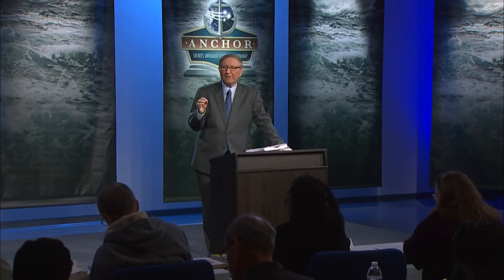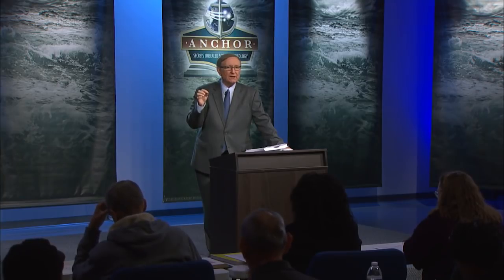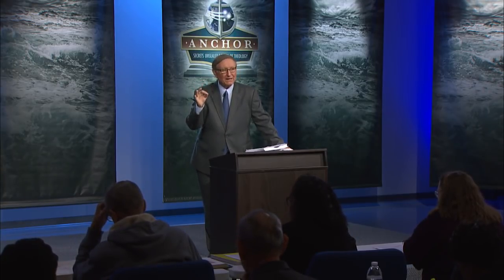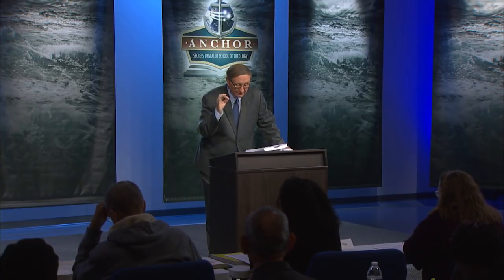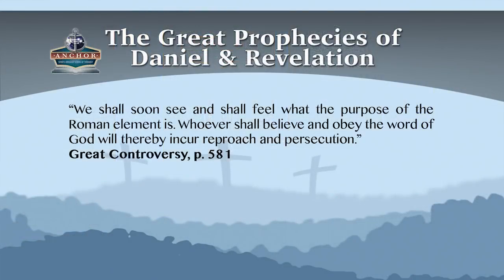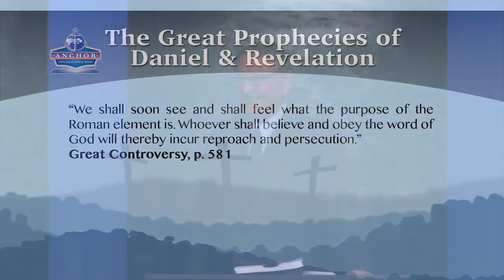Ellen White in Great Controversy page 581 speaks of 'the Roman element' when she describes the papacy — the church being able to use the state. She says: 'We shall soon see and shall feel what the purpose of the Roman element is... Whoever shall believe and obey the word of God will thereby incur reproach and persecution.' The Roman element is the church becoming allied with the state — the civil power — to enforce her dogmas and practices.